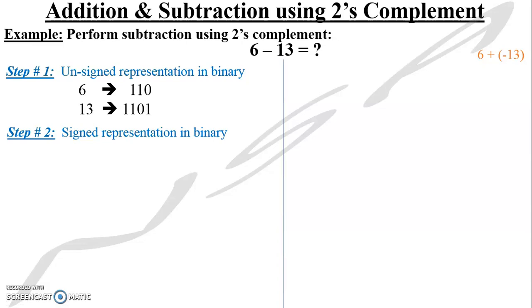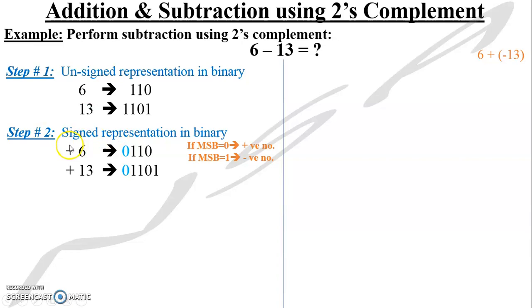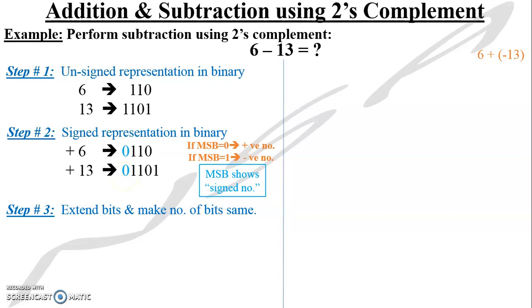Step number two: think of the signed representation of these binary values. The most significant bit is zero in the positive case and one in the negative case. I have represented both in their positive versions and appended a zero to each, because I said positive version and must show most significant bit as zero. Step three is to extend the bits and make the number of bits the same.